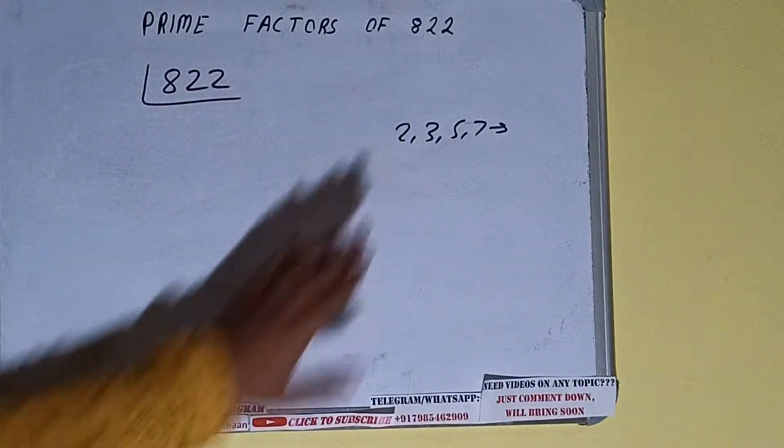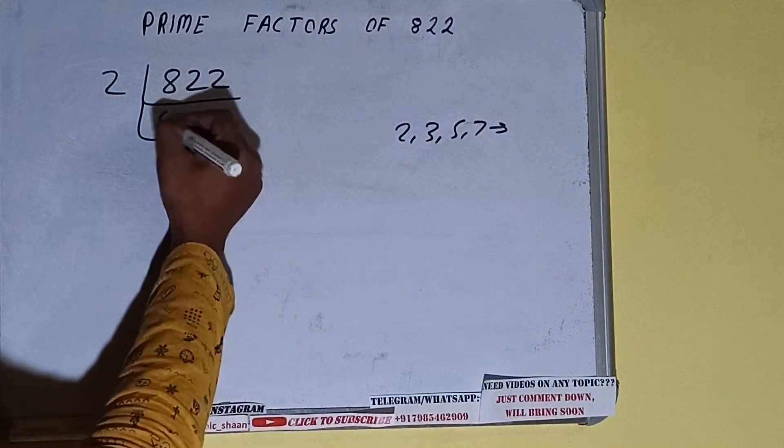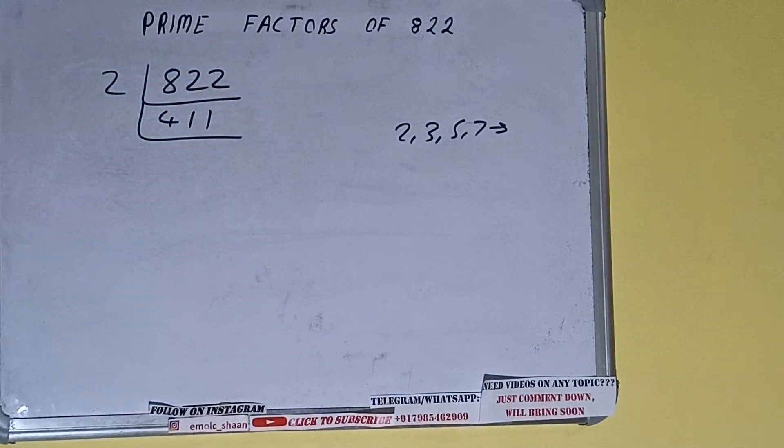2. Is the number 822 divisible by 2? Yes it is, because the number is even, and we'll be having 411. Is it again divisible by 2? The answer is no, because the number is odd. So we'll check with